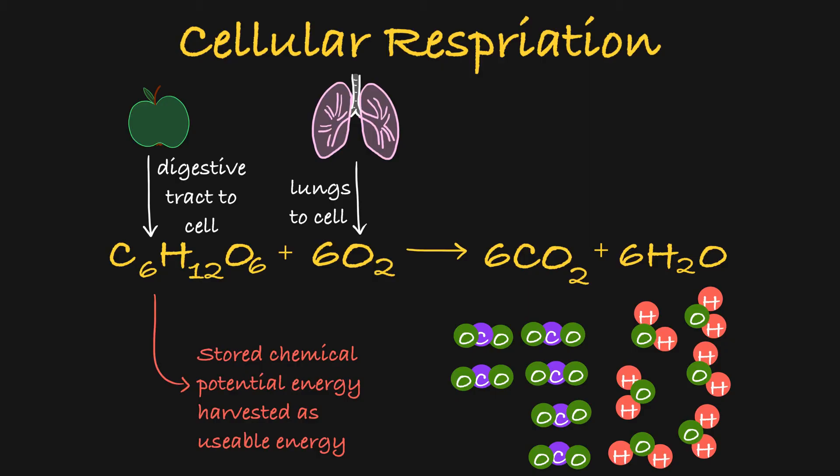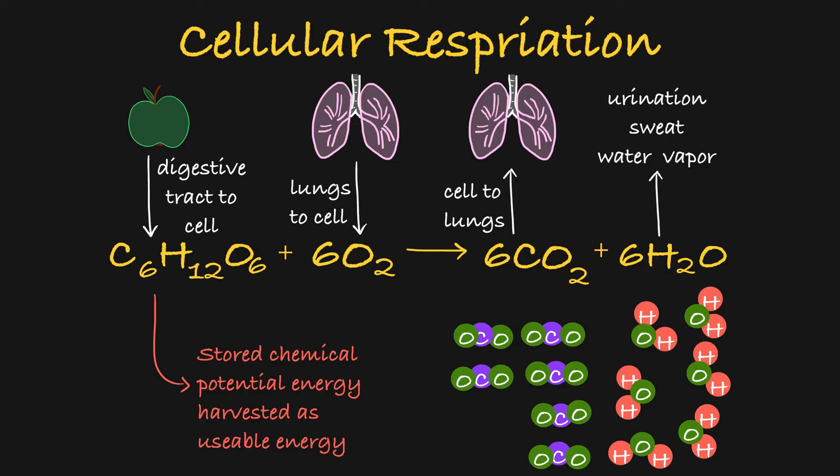After the reaction takes place, you can see that the atoms from the glucose and the oxygen have been rearranged into six molecules of carbon dioxide and six molecules of water. Your body no longer needs these atoms, so you breathe out the carbon dioxide and you expel the water through urination, sweat, or as water vapor in your breath.